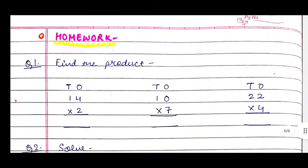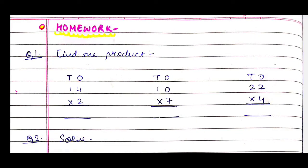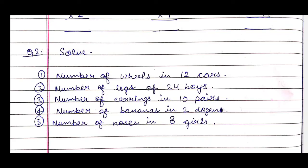After that comes homework. We will give them two questions. First: find the product — 14×2, 10×7, 22×4. Remember we have to give questions related to without regrouping. Second: solve word problems — number of wheels in 12 cars, number of legs of 24 boys, number of earrings in 10 pairs, number of bananas in 2 dozen, number of noses in 8 girls.